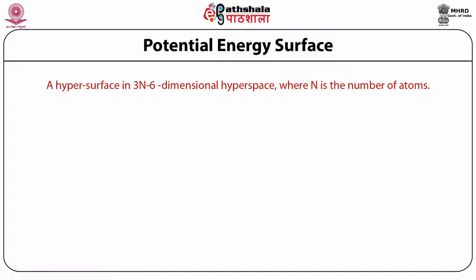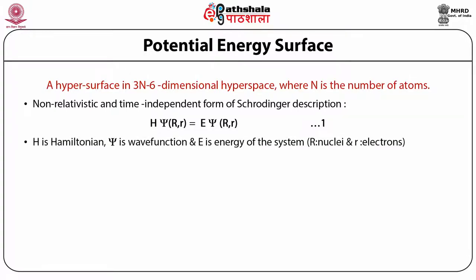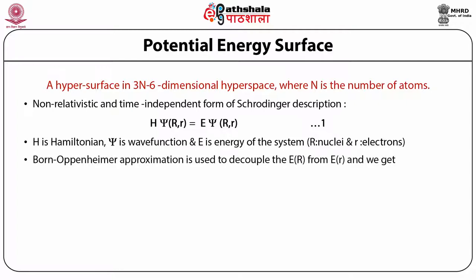Calculating the potential energy surface is an extension of the quantum mechanical approach. Looking at equation 1, it is the non-relativistic time-dependent form of Schrödinger's equation, where H represents the Hamiltonian, psi represents the wave function, and E is the energy. The wave function psi is dependent on the nuclei R and electrons r. By the Born-Oppenheimer approximation, since the nucleus R moves much slower than the electrons, we can divide this equation so that psi depends only on electron motion.